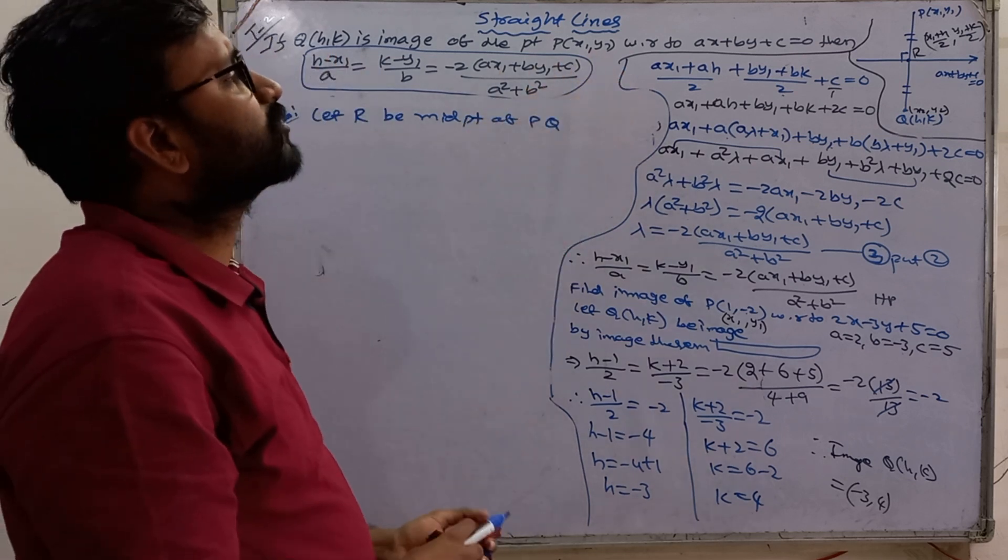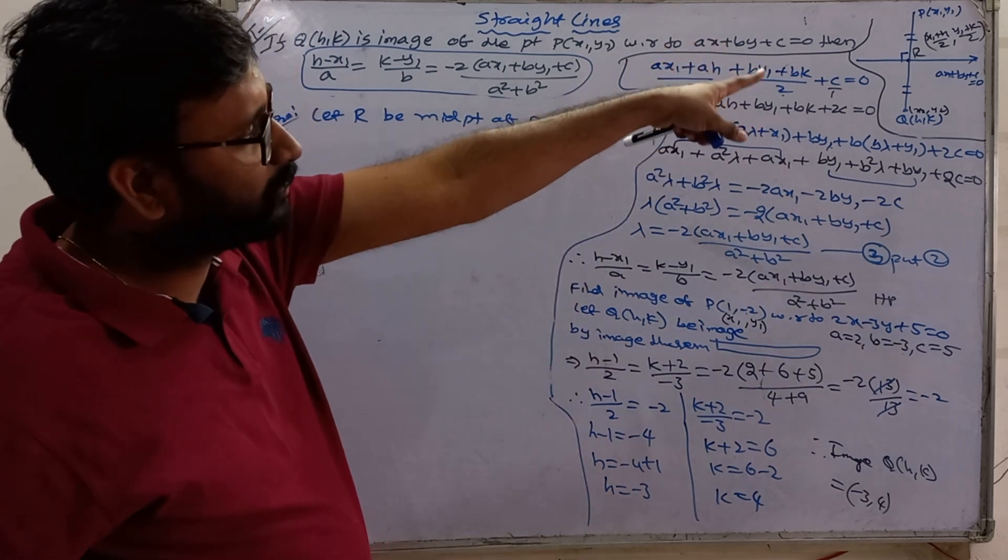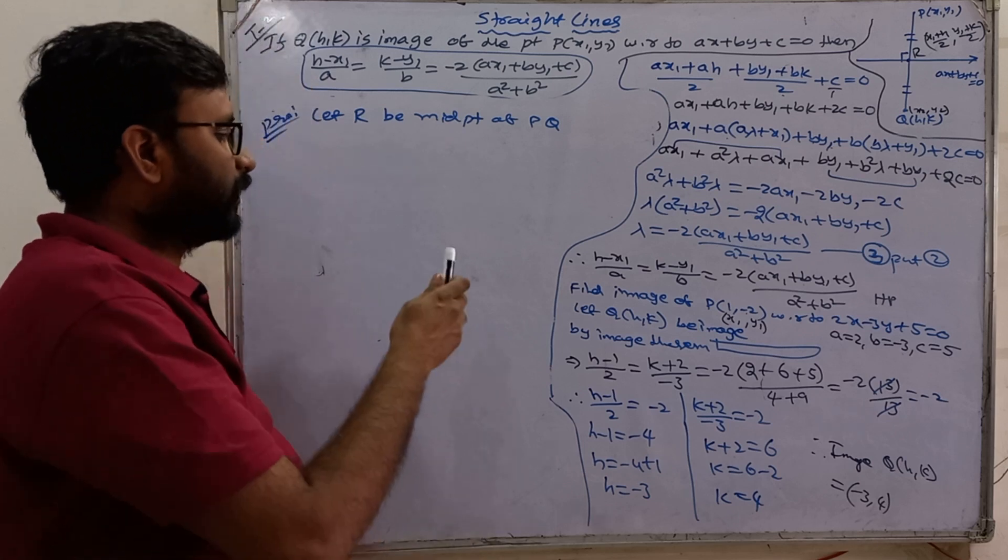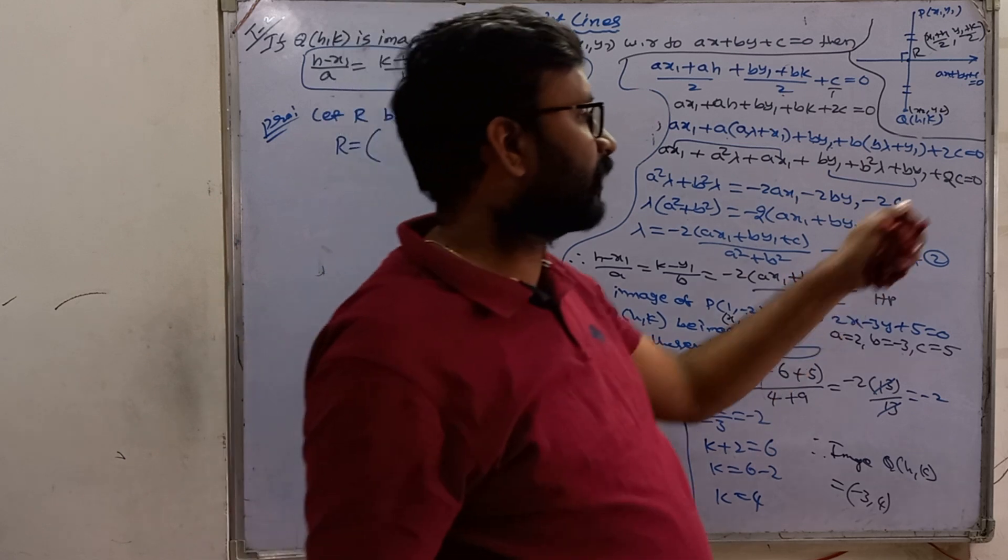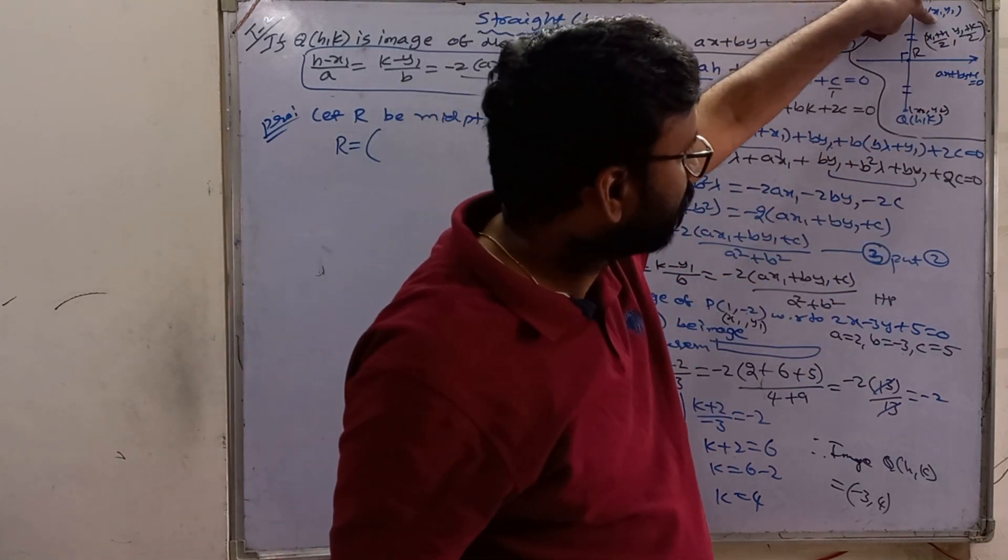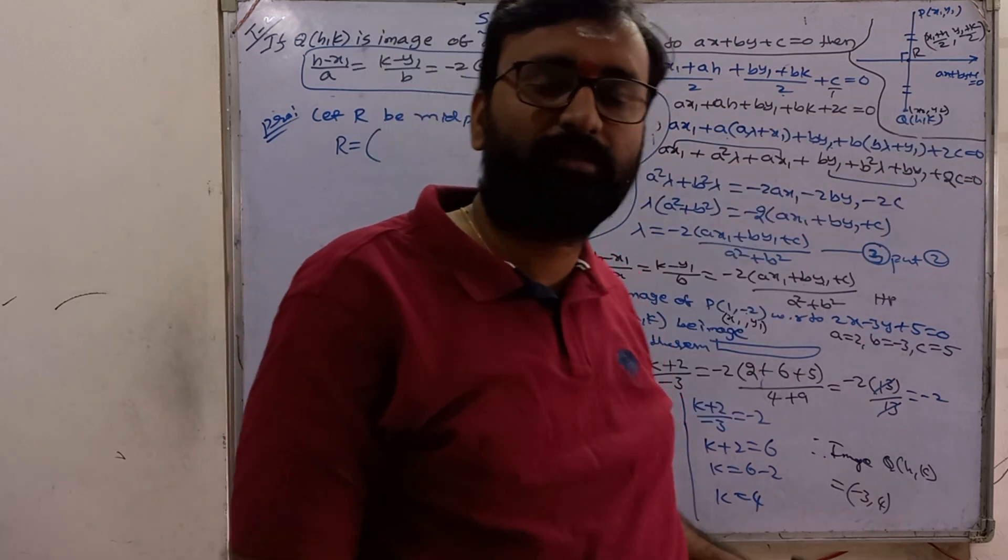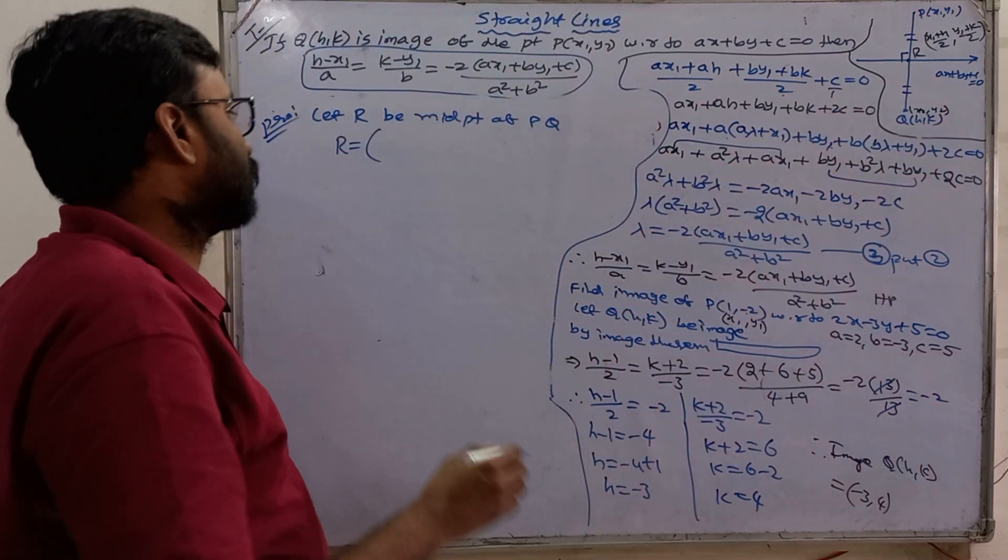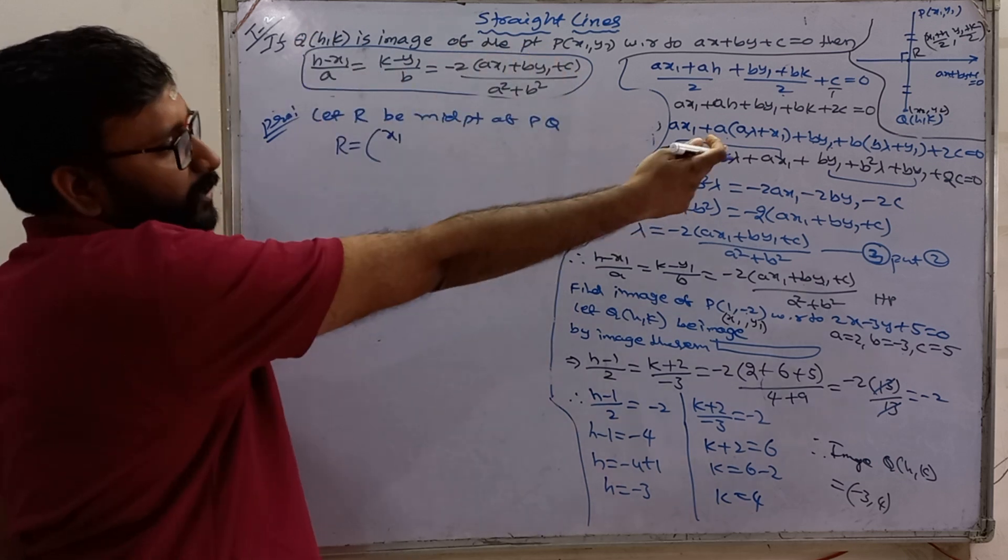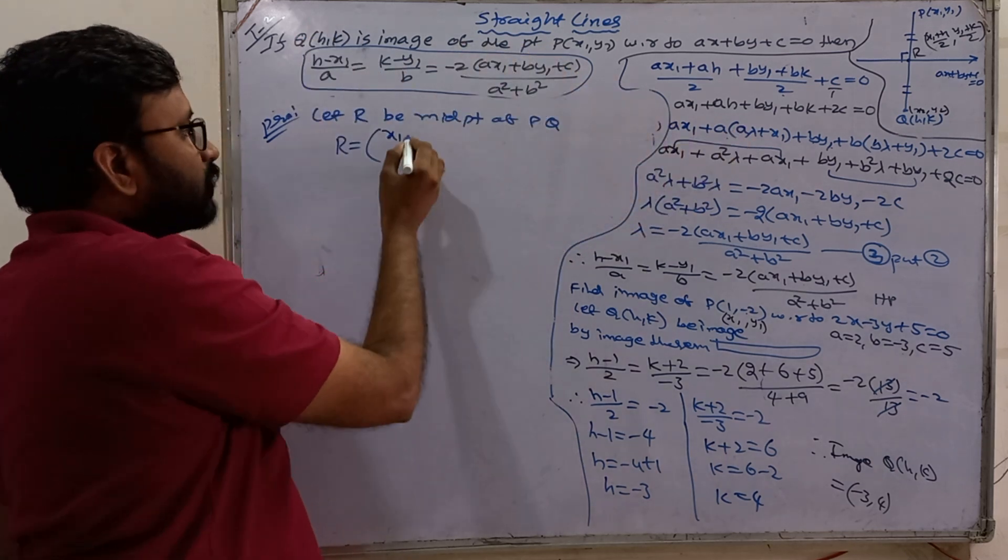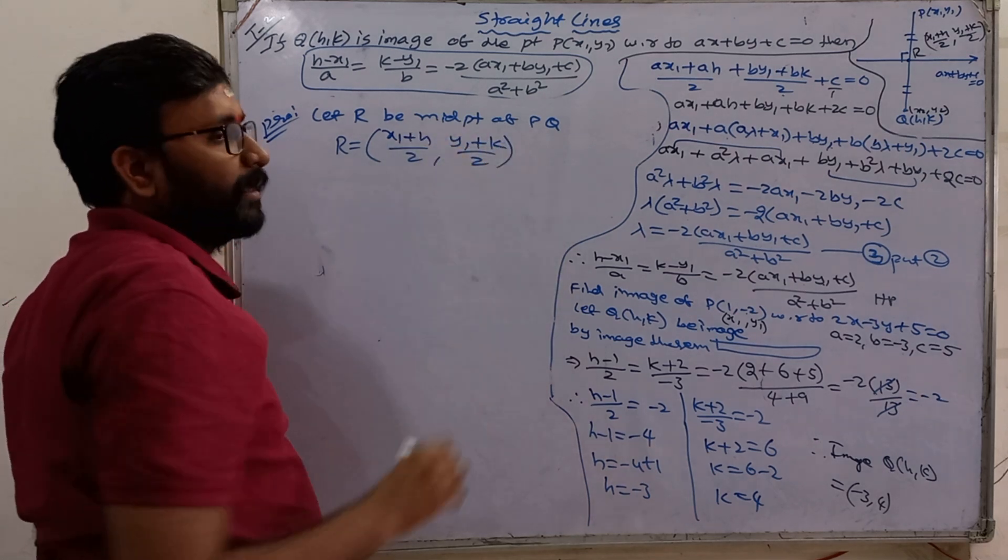That's why I am not writing. If you want, you can see in the diagram also. So P, Q midpoint is equal to R equal to formula x1 plus x2 by 2, y1 plus y2 by 2. That's how you use x1 plus h by 2, y1 plus k by 2. Midpoint formula x1 plus x2 by 2, y1 plus y2 by 2. So x1 plus h by 2, y1 plus k by 2. This is the midpoint of P and Q.